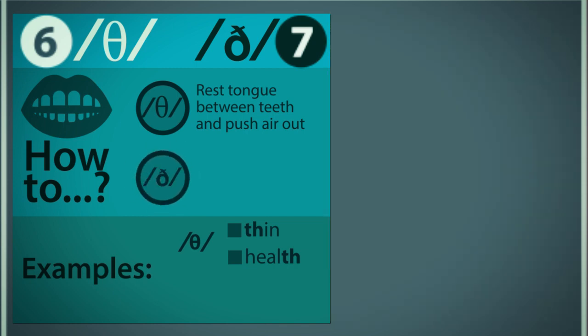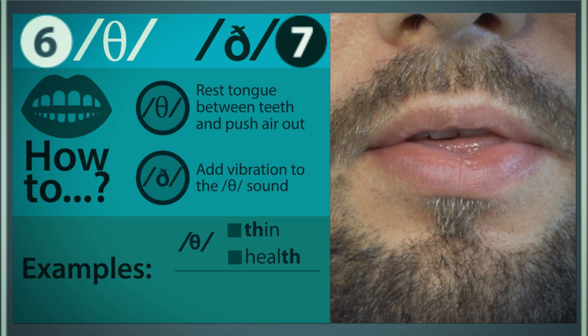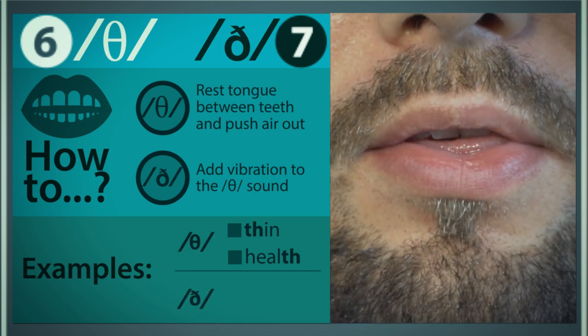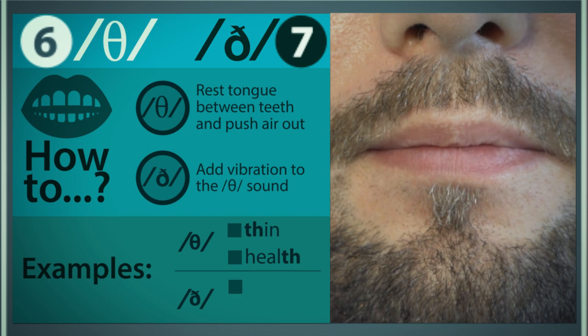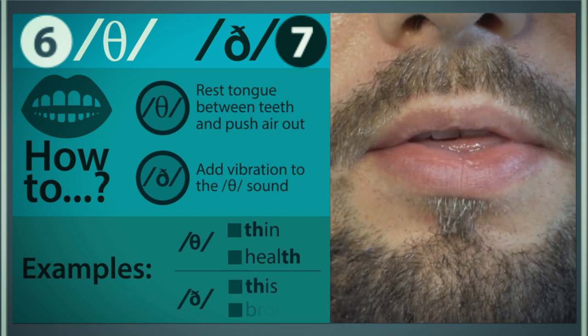To make the TH phoneme, simply add voice from your vocal folds to the TH sound. We see this sound in many English words such as this and brother.